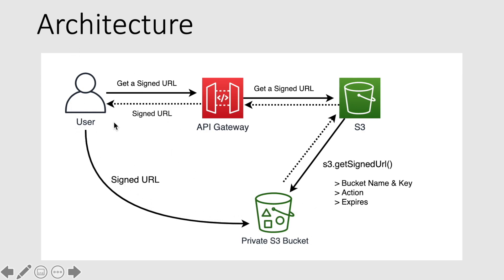One common use of this architecture is to upload to S3 directly from the browser. If a user wants to upload or download from S3 directly from the browser, you should not hard-code AWS credentials in JavaScript — that is highly not recommended. Instead, use this approach: get a signed URL and temporarily allow the user to upload or download objects from S3.